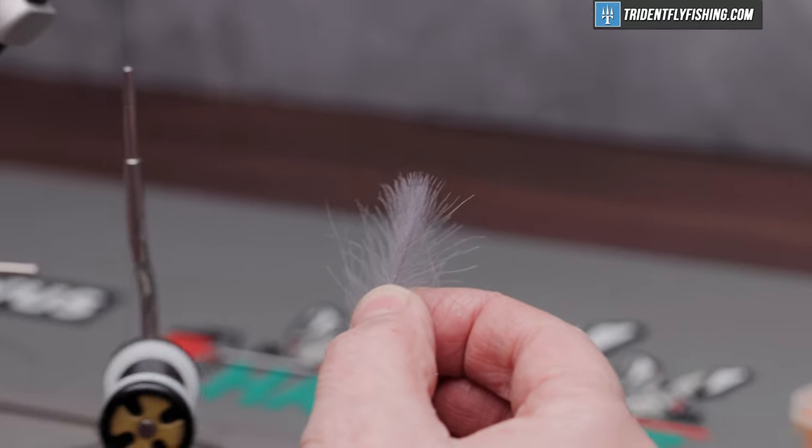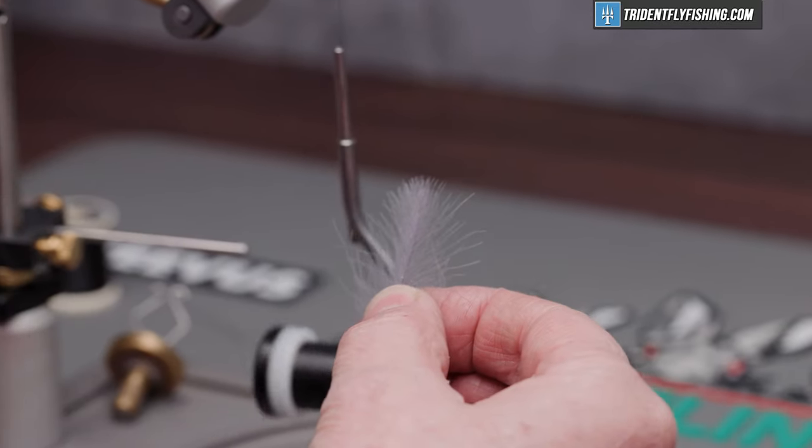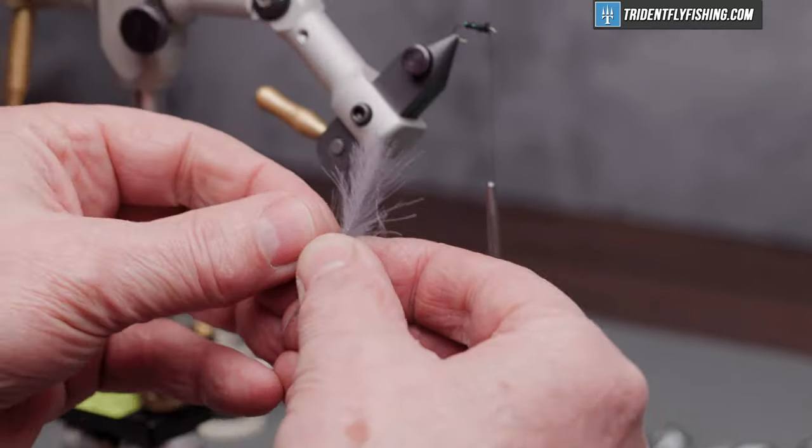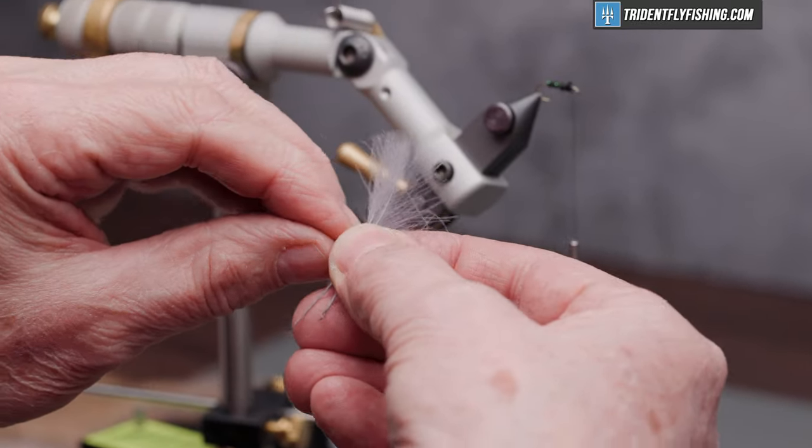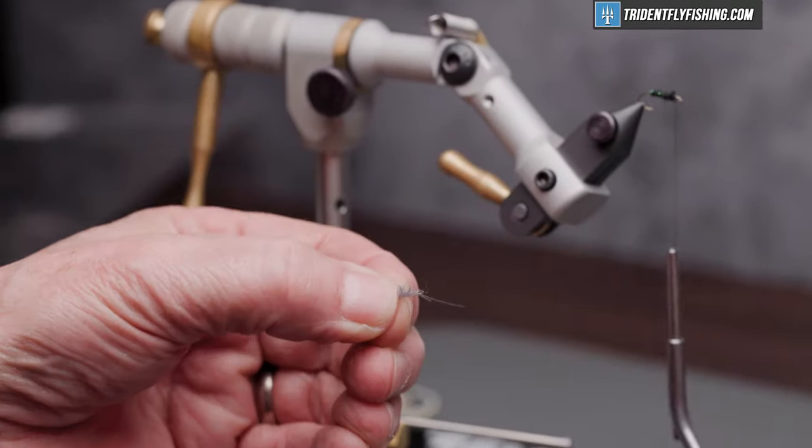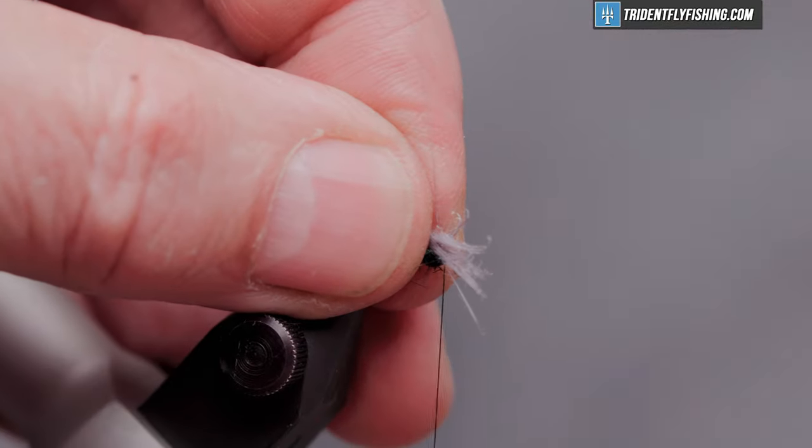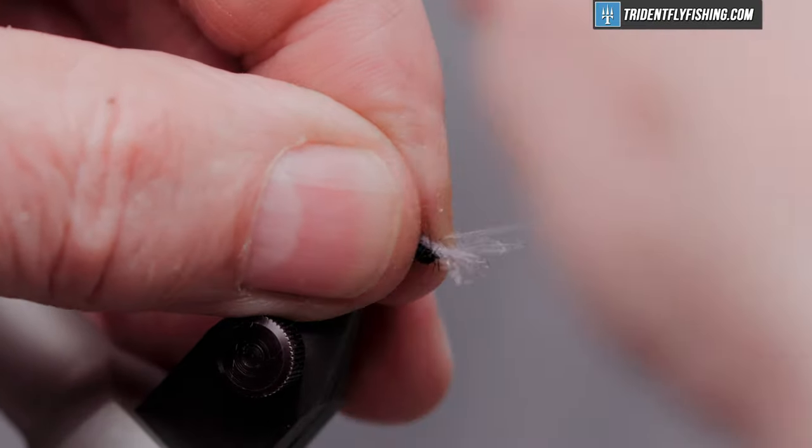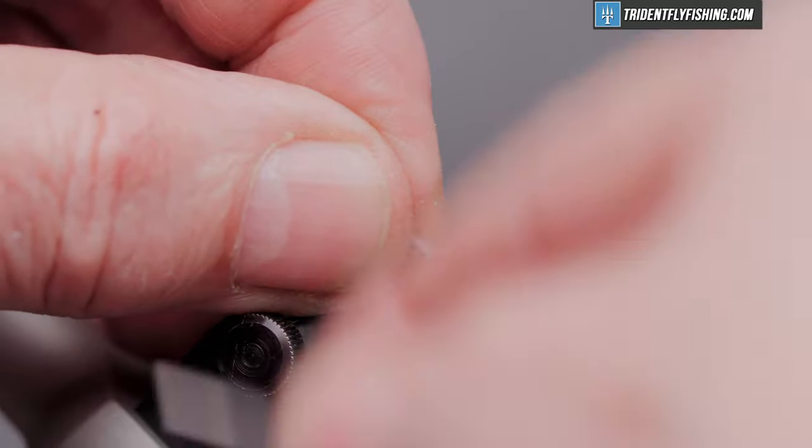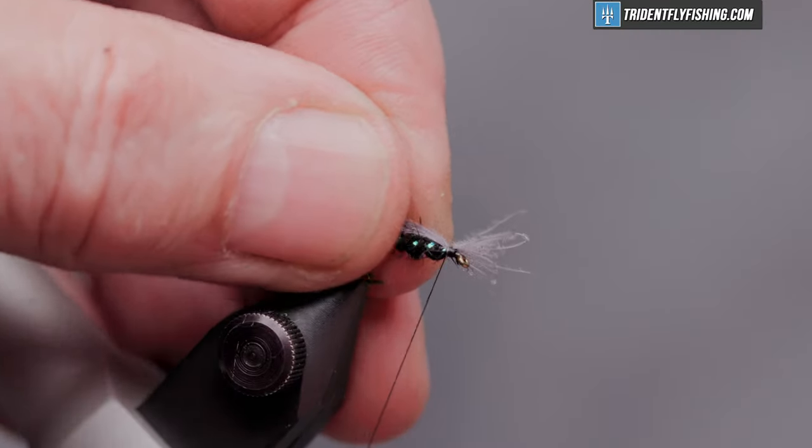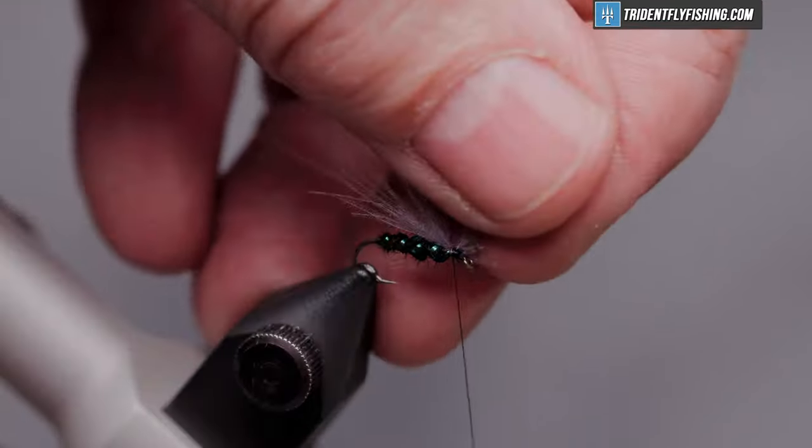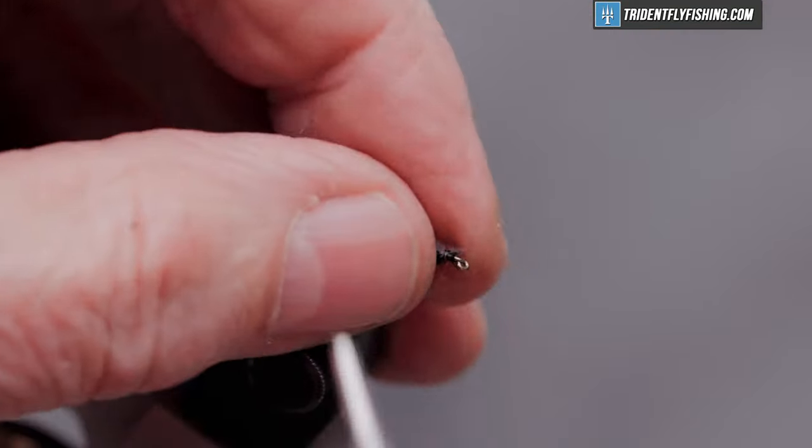So the underwing of this fly is going to be some hairline CDC in the color slate gray. Got a couple of pieces here. I'll pull some material out perpendicular to the stem and tear it off. Don't worry about the length of it right now. We'll fix that towards the end. And just tie that in. Get rid of the excess.